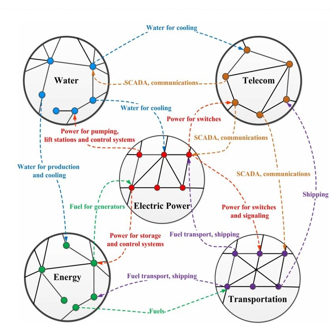Cascading failures may occur when one part of the system fails. When this happens, other parts must then compensate for the failed component. This in turn overloads these nodes, causing them to fail as well, prompting additional nodes to fail one after another.